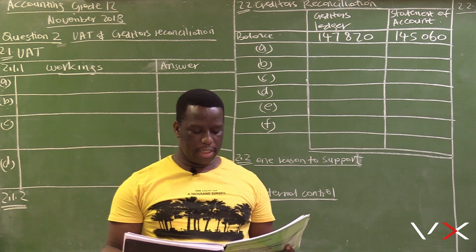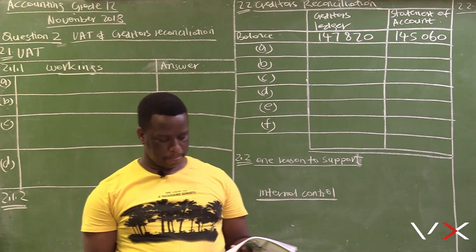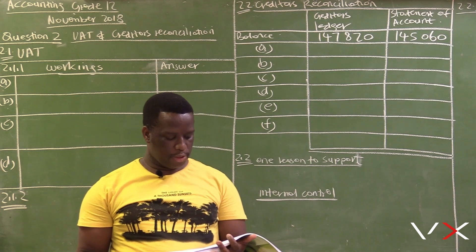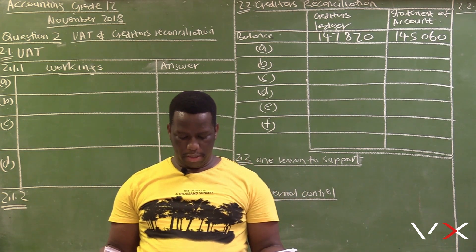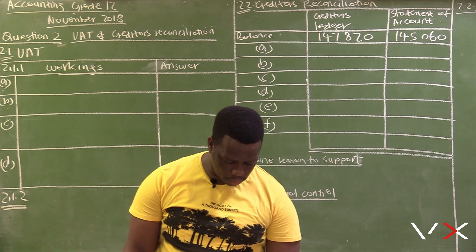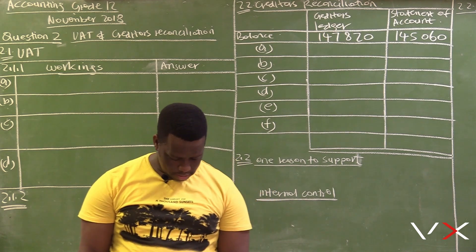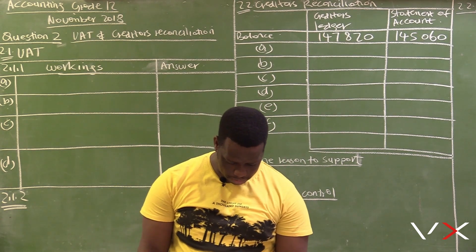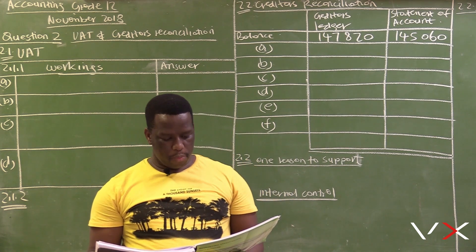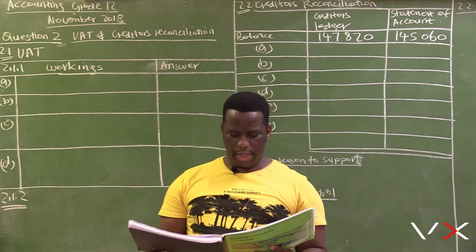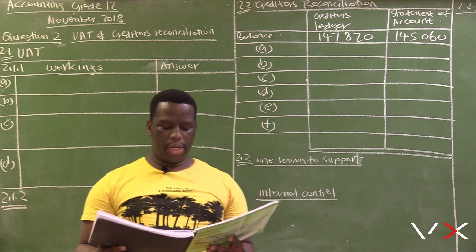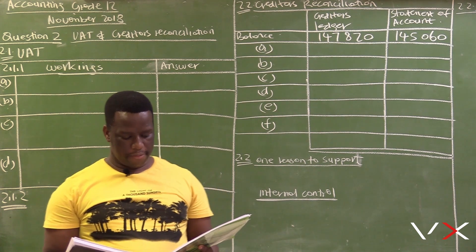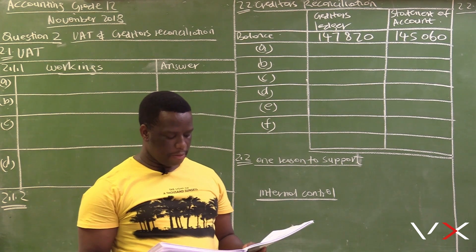Samsung Traders is registered for VAT and the VAT rate is 15%. We are required to calculate the figures indicated by A to D in the table below. We always advise students to have the question paper in front of them. For November 2018, we are on page 6, question 2.1. The table gives the amount excluding VAT, the VAT amount, and the amount including VAT.